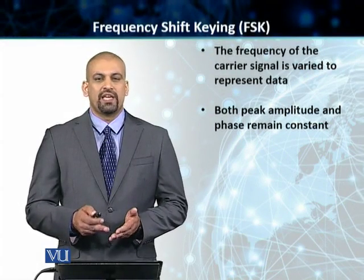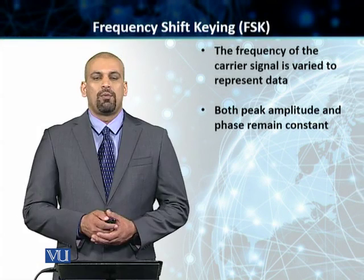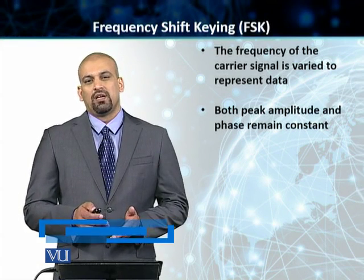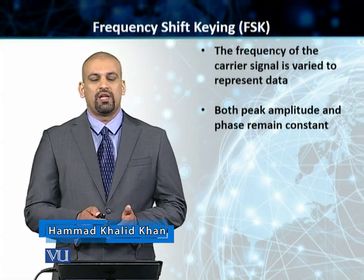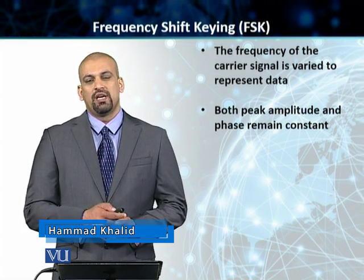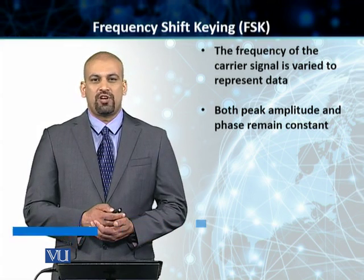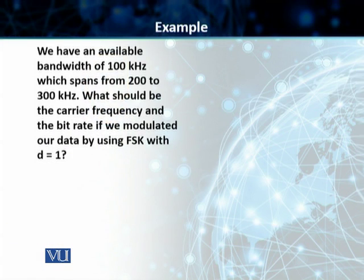Students, the discussion of FSK is ongoing. We have seen FSK, the bandwidth, how the actual FSK happens, and how the frequency varies while the amplitude and the phase remain constant. Let's go to an example now and try to solve this example on our slide. In this example, we have got an available bandwidth of 100 kHz. It spans from 200 to 300 kHz, and we need to find out what should be the carrier frequency and what is the value of the bitrate if we modulate our signal by using FSK with D equal to 1.